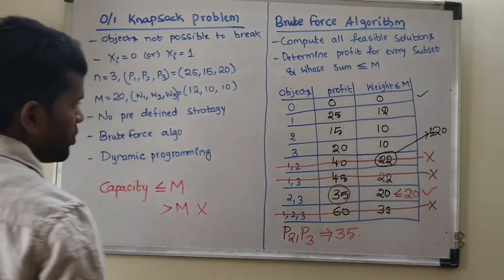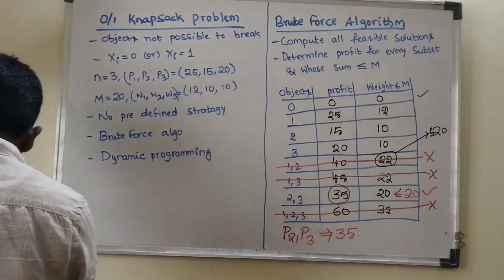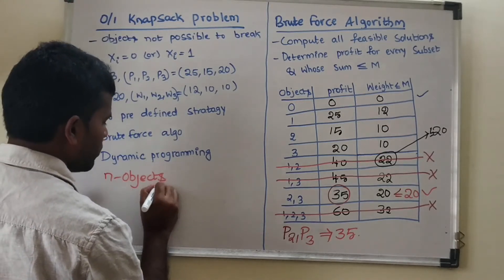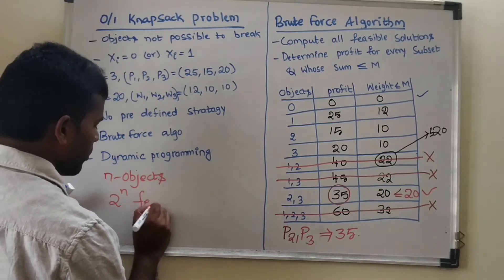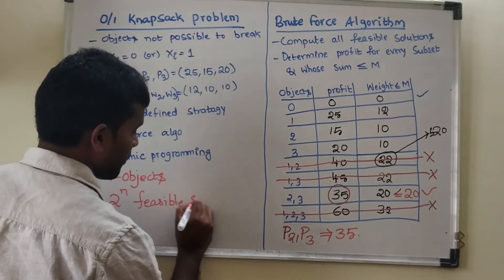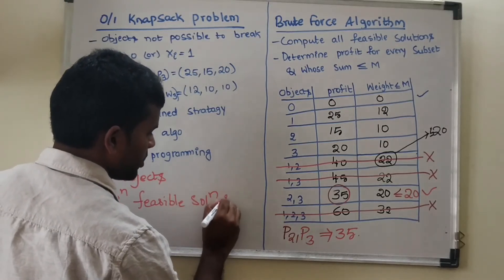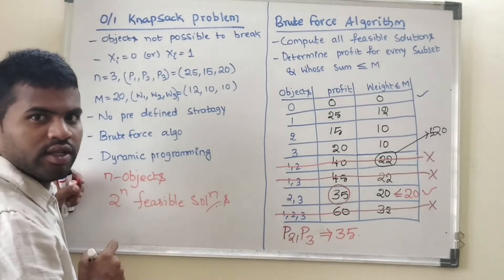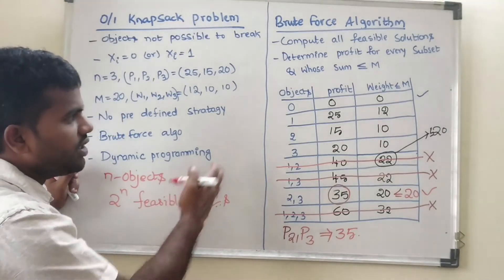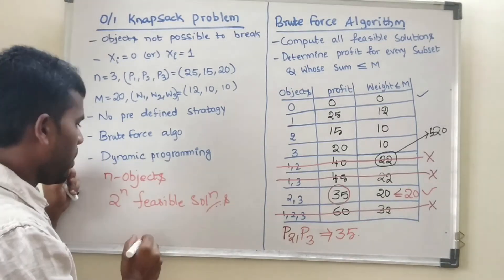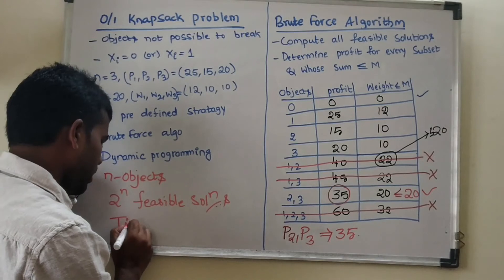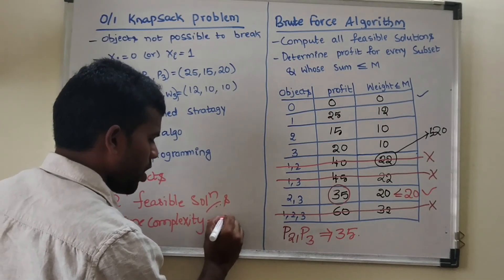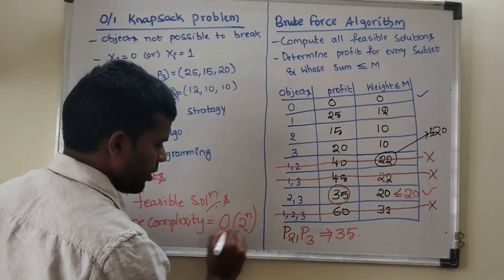How many feasible solutions are there for N objects? With N objects, you have 2 power N feasible solutions. In brute force, you have to calculate all the feasible solutions and then eliminate whichever ones cross the limit or capacity of the maximum weight of the given problem. The time complexity of this brute force approach is O(2^N).